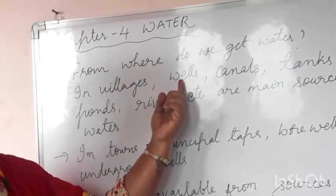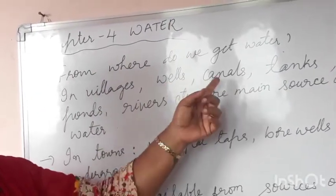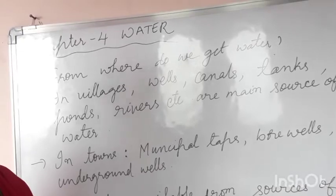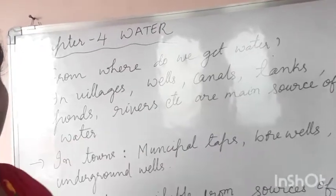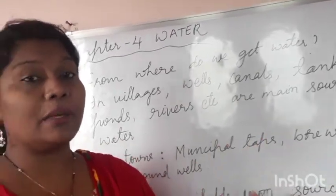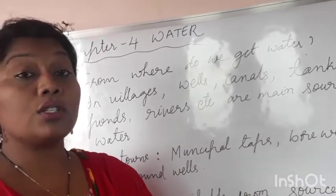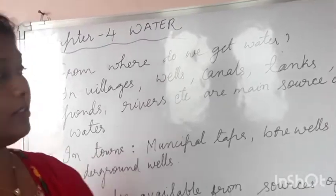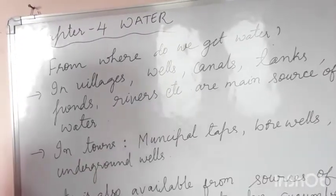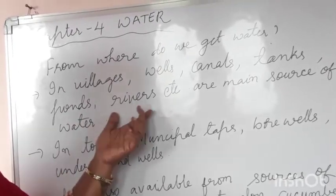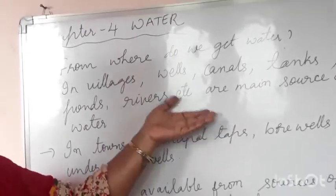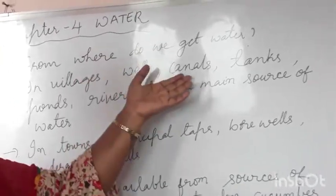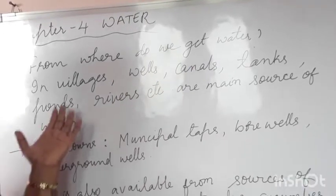In villages we can see wells, canals, tanks — huge water tanks dug into the soil or built near agricultural fields — ponds, and rivers. These are the main sources of water especially in the villages: wells, canals, tanks, ponds, and rivers. If your grandparents live in a village, you have definitely seen all these sources.